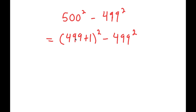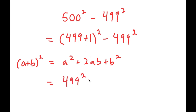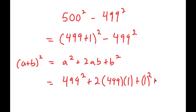If I have something in the form a plus b squared, this is equal to a squared plus 2ab plus b squared. So 499 plus 1 squared turns into 499 squared plus 2 times 499 times 1 plus 1 squared, and I have this minus 499 squared.